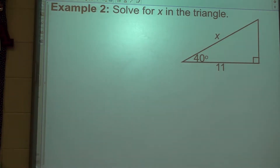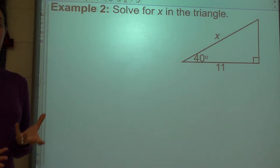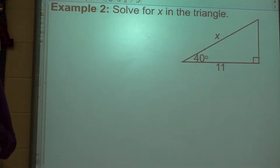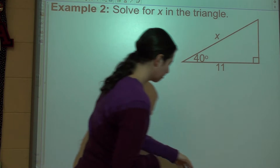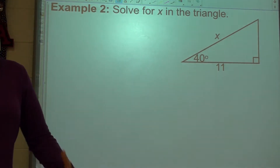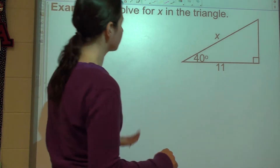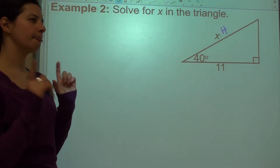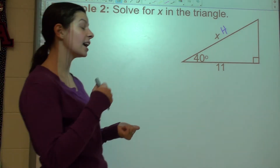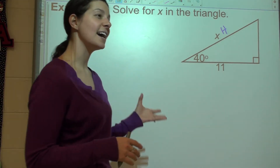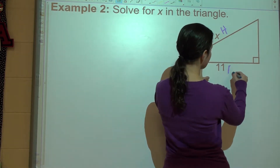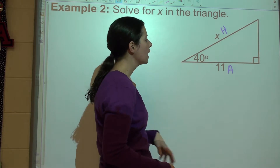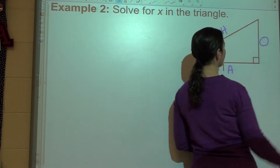Let's look at another example. We've got a right triangle where the angle is 40 degrees, one of the sides is 11, and we're asked to find the missing side length. I always tell students when first starting out to label every single side so you know which is opposite, adjacent, and hypotenuse. Starting with hypotenuse — it's the slanted side, across from the right angle, the longest side. Students tend to have trouble figuring out adjacent versus opposite. Your adjacent side is next to the angle, right by it. Your opposite side is across or away from it.